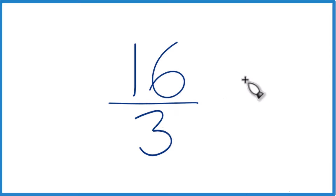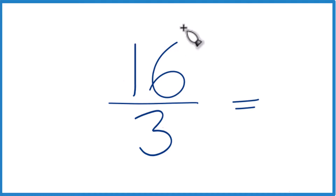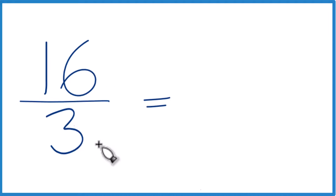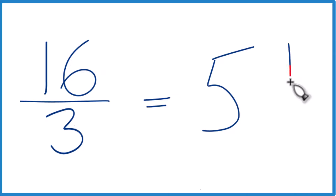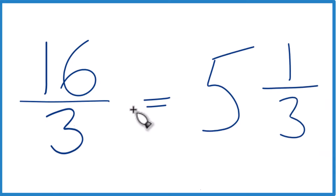But let's get it to a mixed number. We take the denominator and see how many times that goes into the numerator. So 3 times 5 would be 15, so we're going to put a 5 here. 3 times 5 is 15, and we have 1 left over. That remainder becomes the numerator, and we just bring the 3 across. So 16 thirds, when we write this as a mixed number, we get 5 and 1 third.